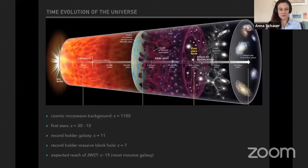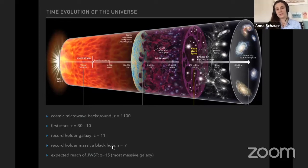When we look at the time evolution of the universe, we can observe the cosmic microwave background at a redshift of over a thousand, and then we have this big gap in time until we can observe the first galaxy at a redshift 11 or the first black hole at roughly a redshift of seven. The first stars, however, form in a range of roughly 30 to 10. So with James Webb, we will be able to target this region.